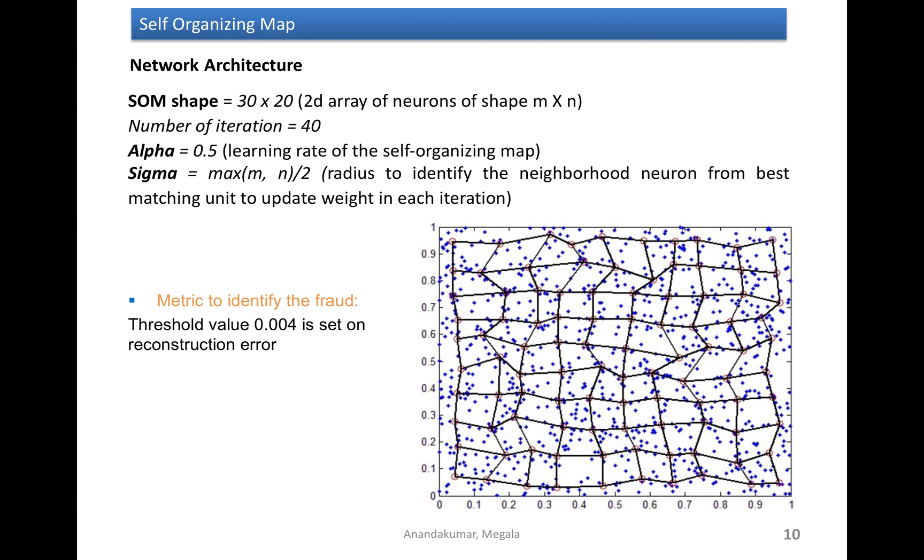During the training process, actually, the weight vector of each neuron would be trying to match against the input data. So the weight would get adjusted such that it would represent the input data. After training process, I just looked at the weight distance of each neuron corresponding to the neighborhood neuron. That would indicate whether the given neuron is an outlier or not.